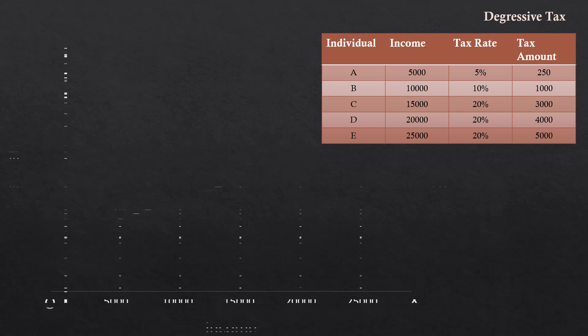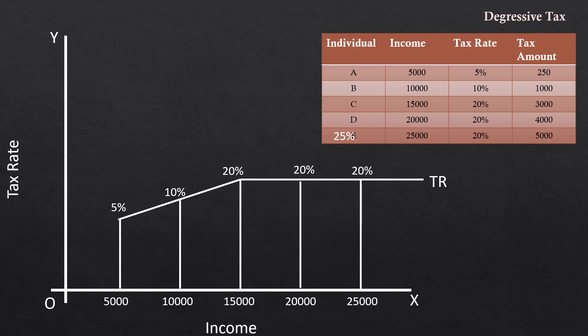The graph illustrates degressive taxation. TR is the tax rate curve. It slopes upward initially. Tax rate increases with tax base. After that, the curve is flat and parallel to x-axis. Tax rate remains the same irrespective of income.